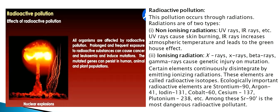Certain elements continuously disintegrate by emitting ionizing radiations and are called radioactive isotopes. Ecologically important radioactive elements are strontium-90, argon-41, iodine-131, cobalt-60, cesium-137, and plutonium-238. Among these, cesium-90 (Sr-90) is the most dangerous radioactive pollutant.